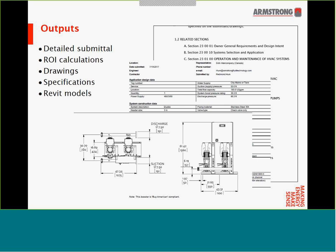After selecting our booster, we get typical outputs. The first includes a detailed submittal, typically in AIA format. We also have ROI calculations — return on investment. This is quite important, as ROI calculations can get you significant rebates in certain regions, provided by either the government or the utility. Because variable speed boosters save a significant amount of energy compared to constant speed boosters, there's potential for a very large rebate. Other typical outputs include drawings, specifications, and Revit models that can be included in your building models.